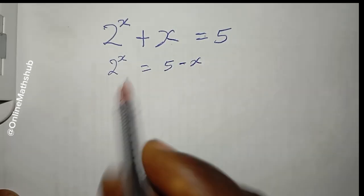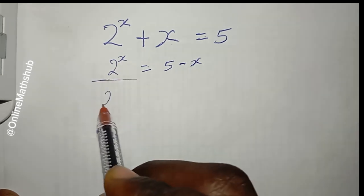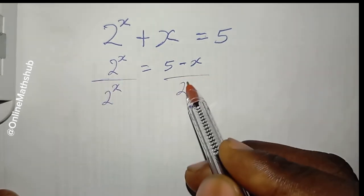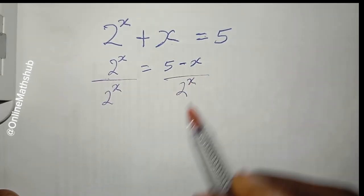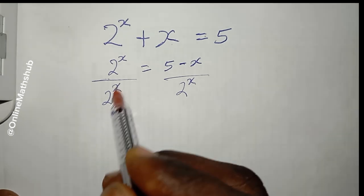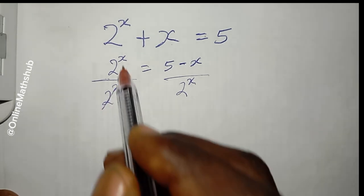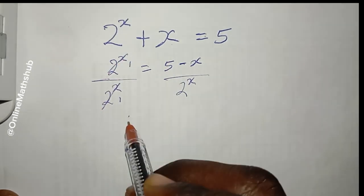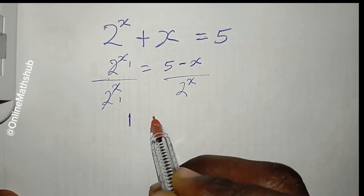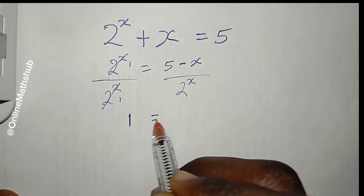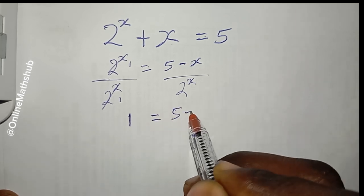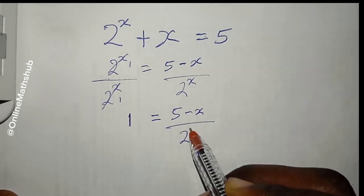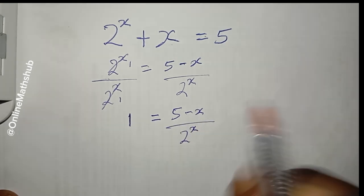Now I'm going to divide through by 2^x. This side divides to 1, and we get 1 = (5 − x) / 2^x.